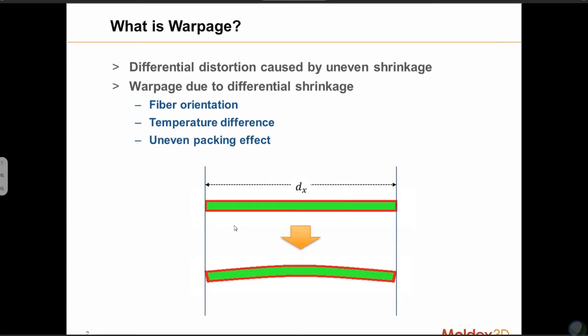Warpage is differential distortion caused by uneven shrinkage, and the uneven shrinkage is usually caused by fiber orientation, differential temperature distribution, or uneven packing effect.